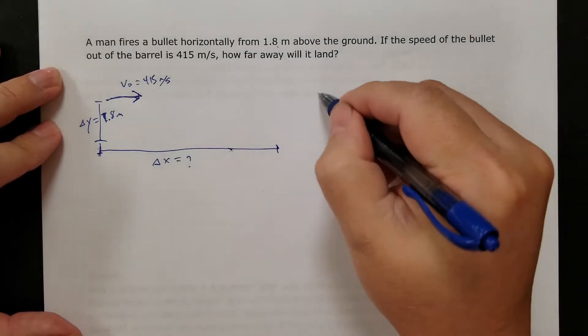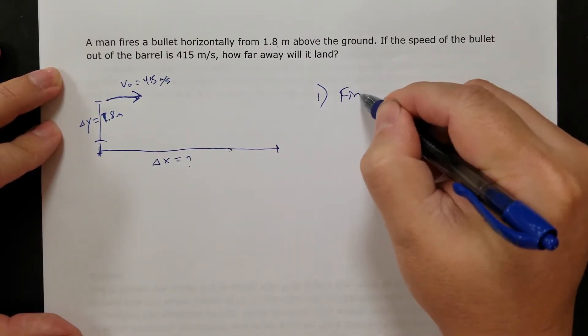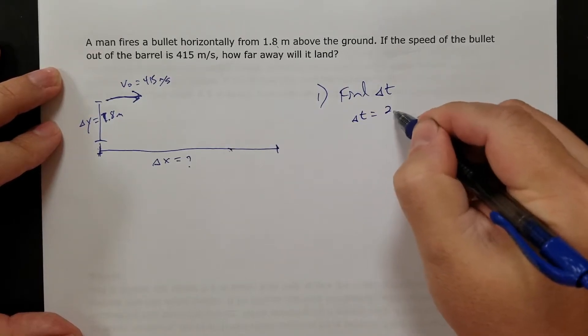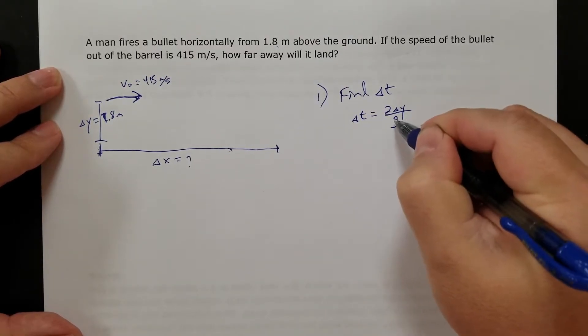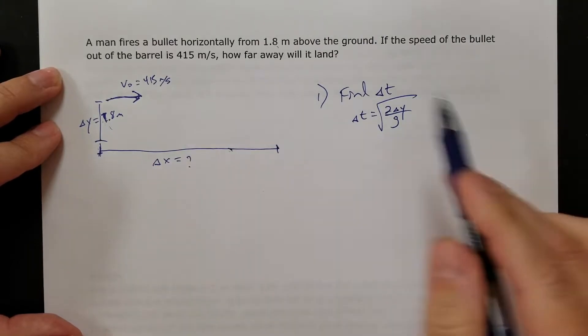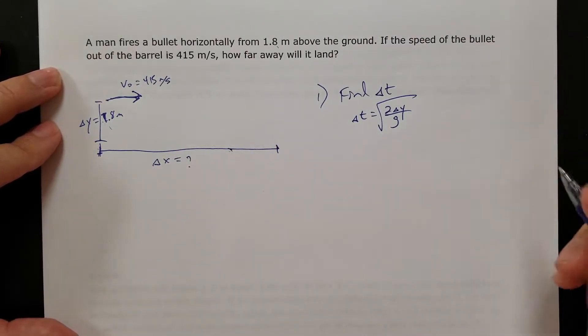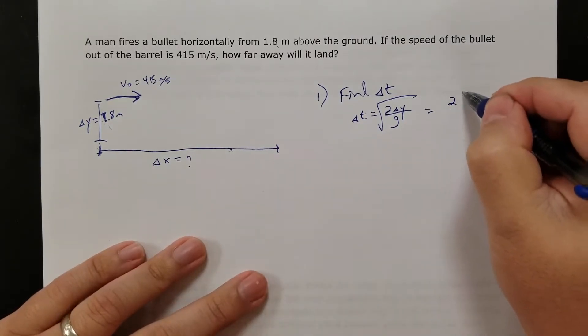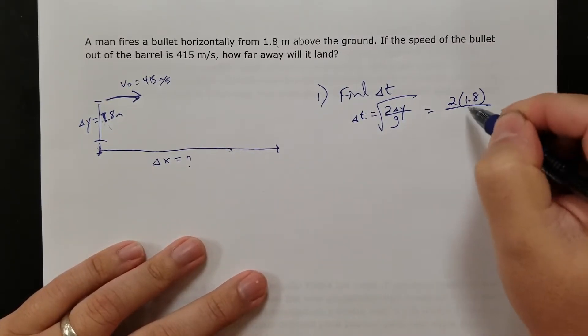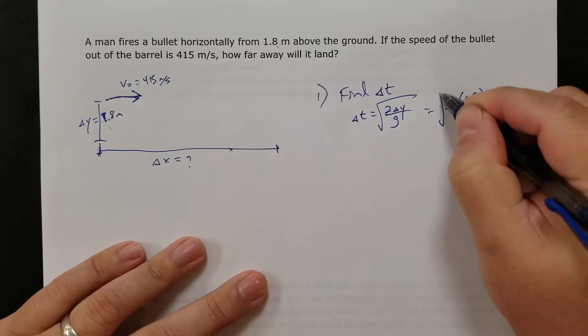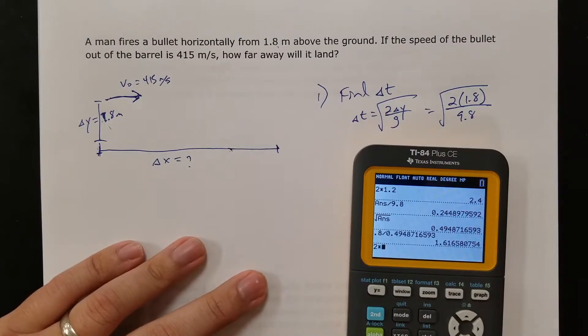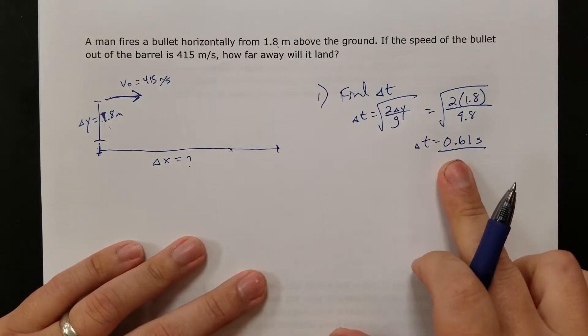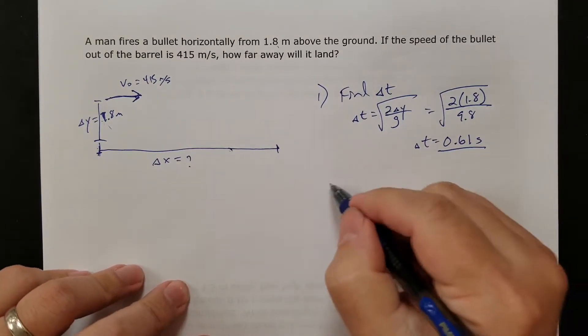So again, first step, find time. And again, time, if you know the height, is square root of 2y over g. If you know the height, you automatically know the time. That should be the first thing you're thinking. So here, let's plug in and solve. So 2 times 1.8 divided by 9.8 square root, that gives me 0.61 seconds. That was easy.